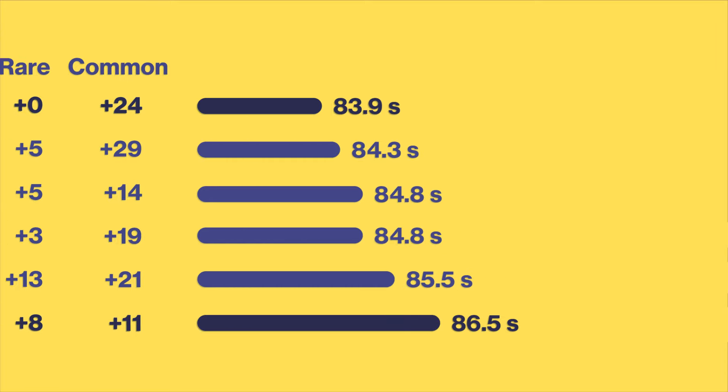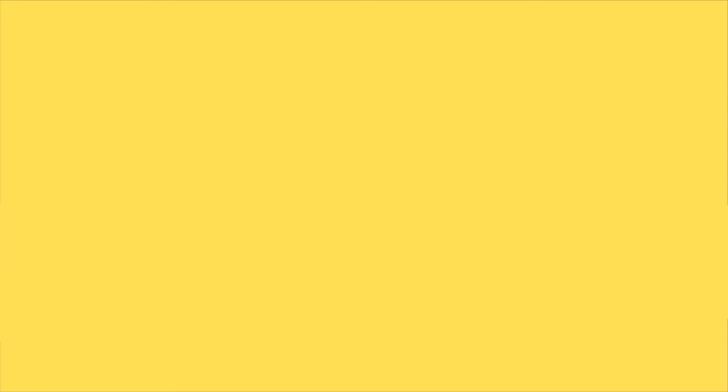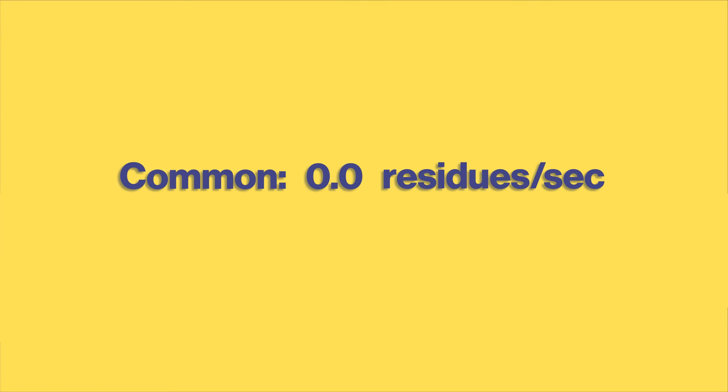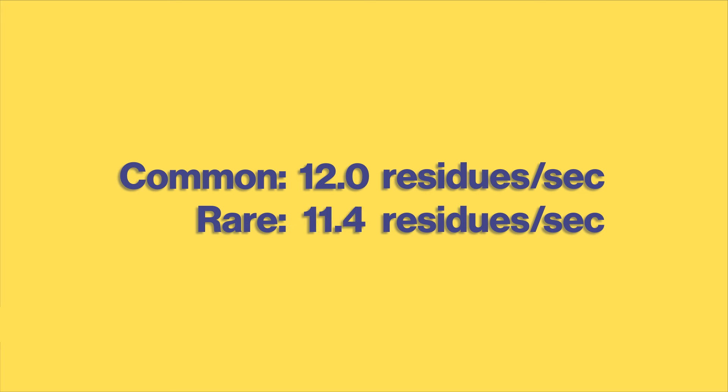Taking into account the number of common and rare codons in each insert, the researchers concluded that each common codon was translated at an average rate of 12 residues per second, while each rare codon was translated at a rate of about 2 residues per second, which was 6 times slower.